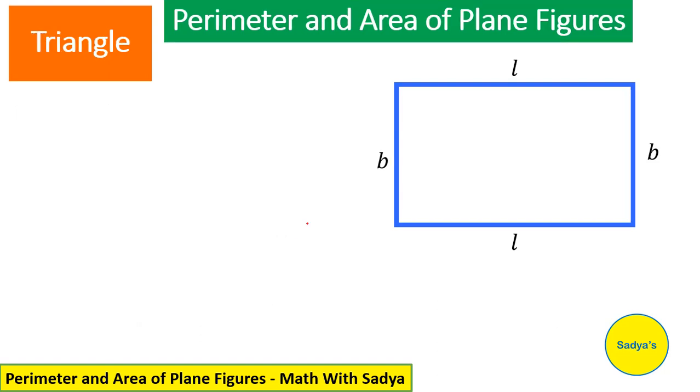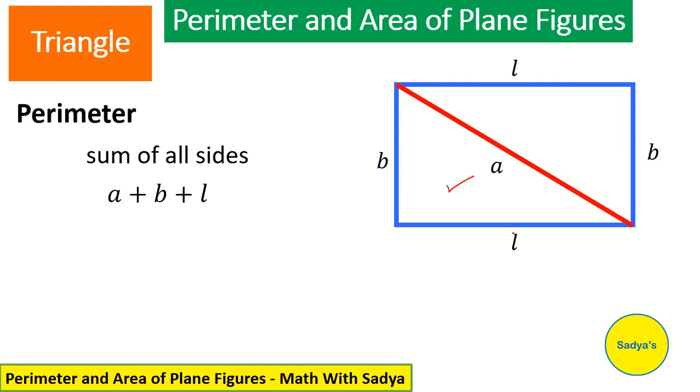The third shape that we will consider is triangle. But here a rectangle is drawn. Is there any relationship between a triangle and a rectangle? Yes. If you cut a rectangle diagonally, you get 2 triangles. To find the perimeter of the triangle, you have to add the 3 sides of a triangle. Consider either this triangle or this one. I am taking this one into consideration. Let's say the length of this diagonal is A. Then the perimeter would be sum of all the sides of this triangle which are A plus B plus L.